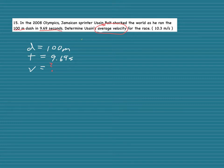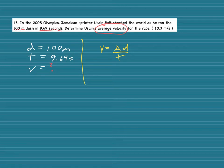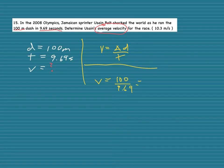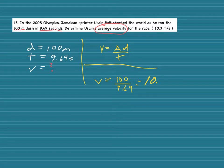Our equation for average velocity is V equals delta D over T. We substitute and solve: V equals 100 over 9.69. Putting that into the calculator gives 10.3199, which rounds to 10.32 meters per second.